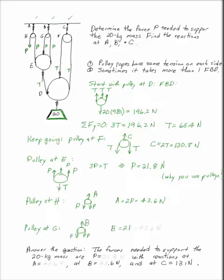Stop. Reread the question - what were you asked to find? The forces needed to support the 20 kg mass are: P equals 21.8 Newtons, with reactions at A of 43.6 Newtons, at B of 43.6 Newtons, and at C of 131 Newtons, to three significant digits.